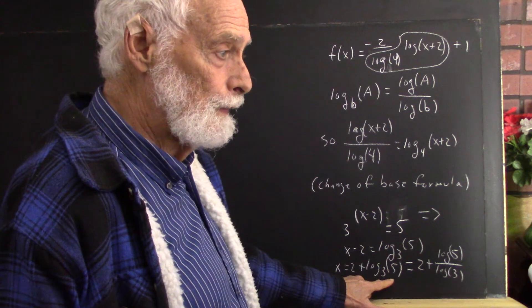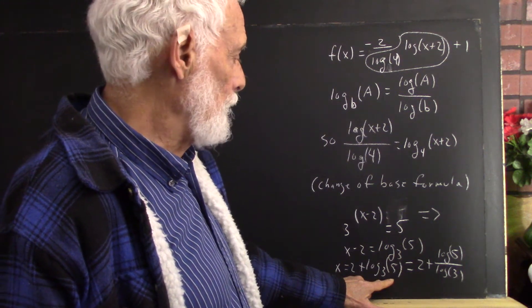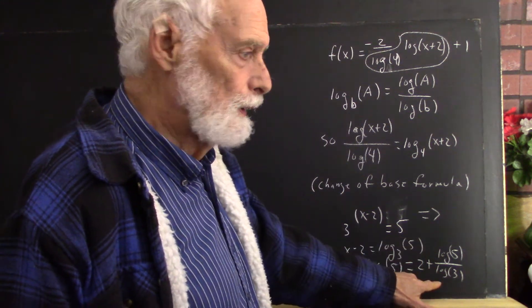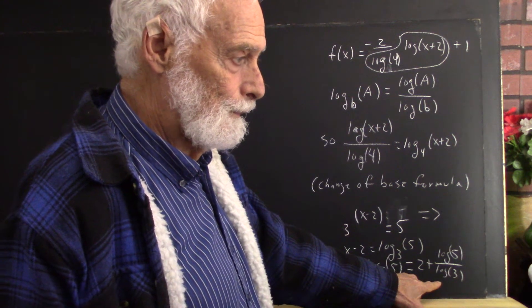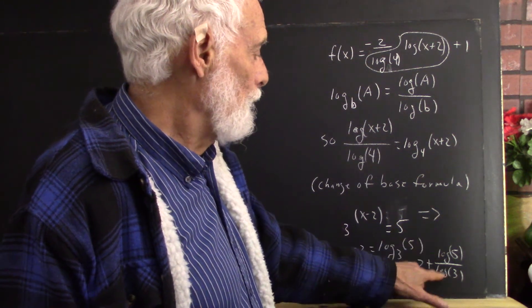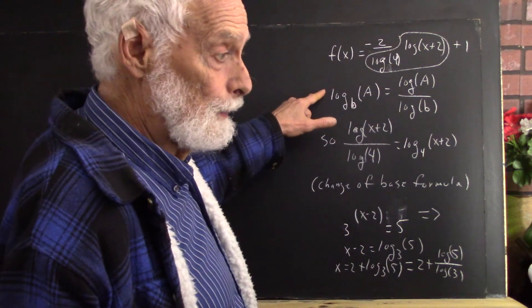Now how do we do log base 3 of 5? Well, we go to the calculator and we divide log 5 by log 3. And that is done using the same law.